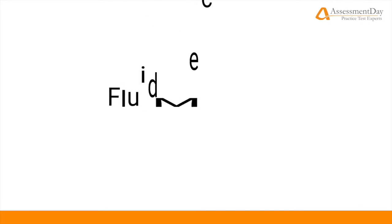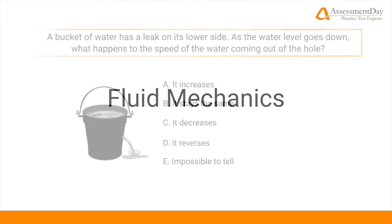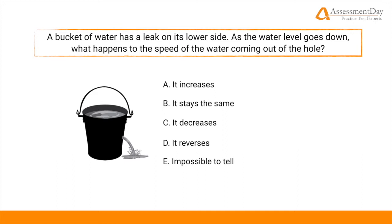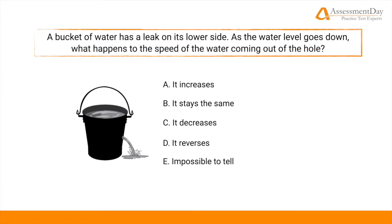Let's take a look at our question on fluid mechanics. A bucket of water has a leak on its lower side. As the water level goes down, what happens to the speed of the water coming out of the hole? A, it increases. B, it stays the same. C, it decreases. D, it reverses. Or E, impossible to tell. Take a moment to pause this video and see if you can work out the question for yourself. You shouldn't need more than 30 seconds or so.